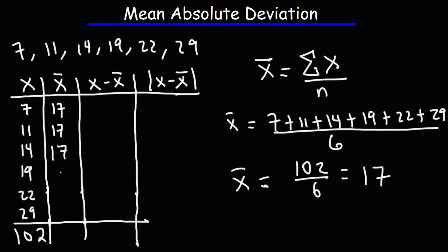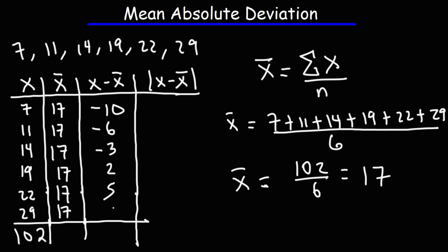Now once we have the mean, we're going to subtract each data point from the mean. So 7 minus 17 is negative 10. 11 minus 17 is negative 6. 14 minus 17 is negative 3. 19 minus 17 is 2. And then this is 5 and then 12.